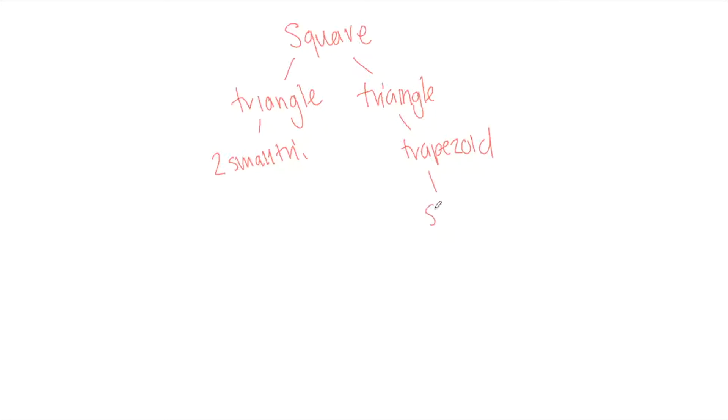And then this trapezoid becomes a smaller trapezoid when you take off the parallelogram. So square to two triangles to two smaller triangles to a trapezoid because you take off the big triangle to a smaller trapezoid because you take off the parallelogram.